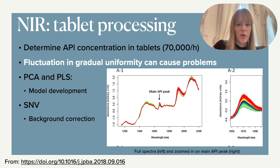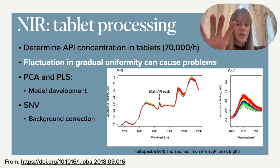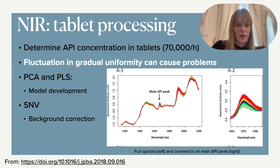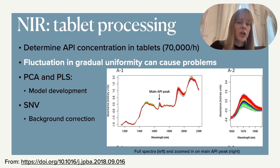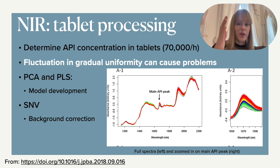Within the whole spectrum there is only one main API peak — though most compounds have multiple peaks. There was one main peak they looked at to quantify the response, which is just a very small part of a big spectrum. Zooming in, the different colors represent different concentrations, and you can see the influence of concentration on the height of the peak. We would first need to apply background correction so peaks aren't artificially elevated, then use PCA for a visual representation or PLS to quantify how the response correlates to the amount of API within a tablet.